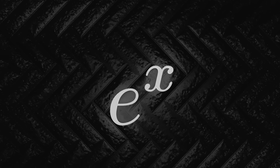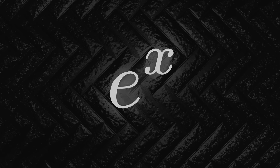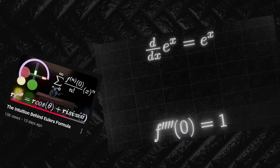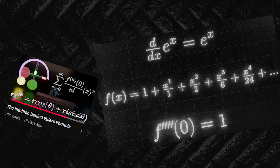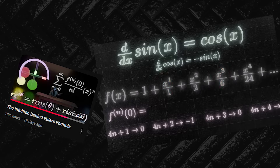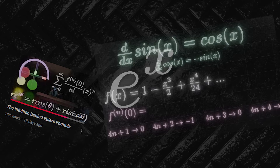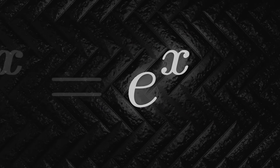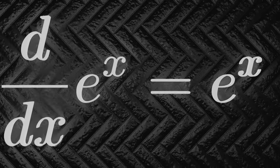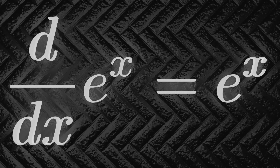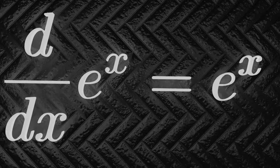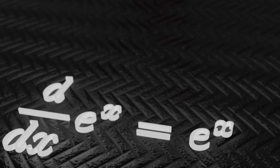In the last 'intuition behind' video, I explained Euler's formula, and it was all fine and good if not for one glaring problem. I just dropped e to the x in there and didn't bother to explain how it could be its own derivative. So we're going to right this wrong in this video. That's why we'll start with the long-awaited Euler's constant.